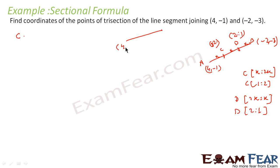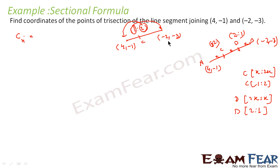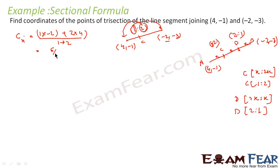This is (4, -1) and (-2, -3), and C divides in ratio 1 is to 2. For C, the x-coordinate will be: 1 into (-2) plus 2 into 4, divided by 1 plus 2. This is nothing but (-2 + 8) / 3, that is 6/3, which equals 2.